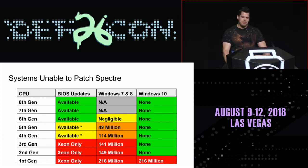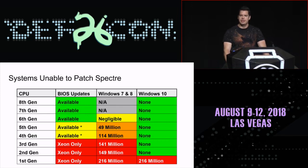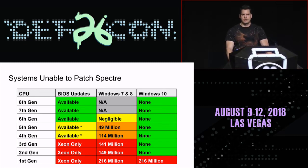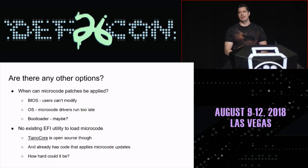If you look around, most systems sixth generation and beyond — which is Skylake — are getting BIOS updates. Fourth and fifth generation it's kind of spotty, a mix — some vendors have done it, some haven't. And anything third generation or older, I have only seen BIOS updates for Xeon platform, so no laptop or desktop systems are really getting updates there. This sucks — that's a lot of systems that can't patch.